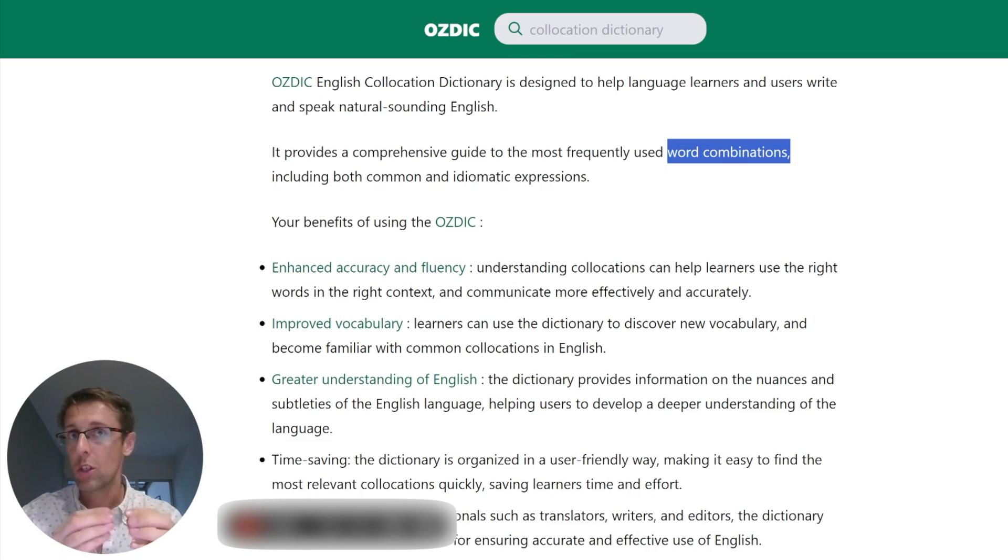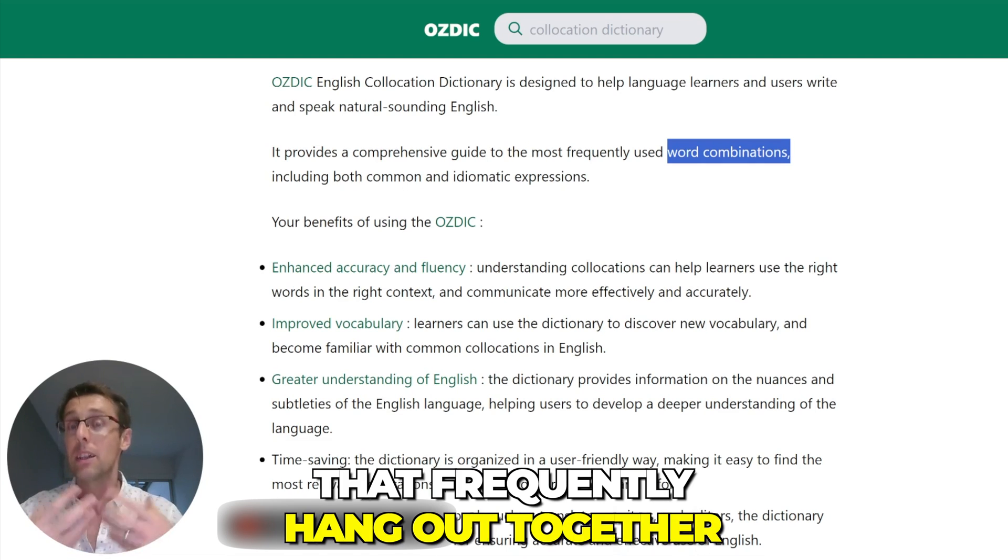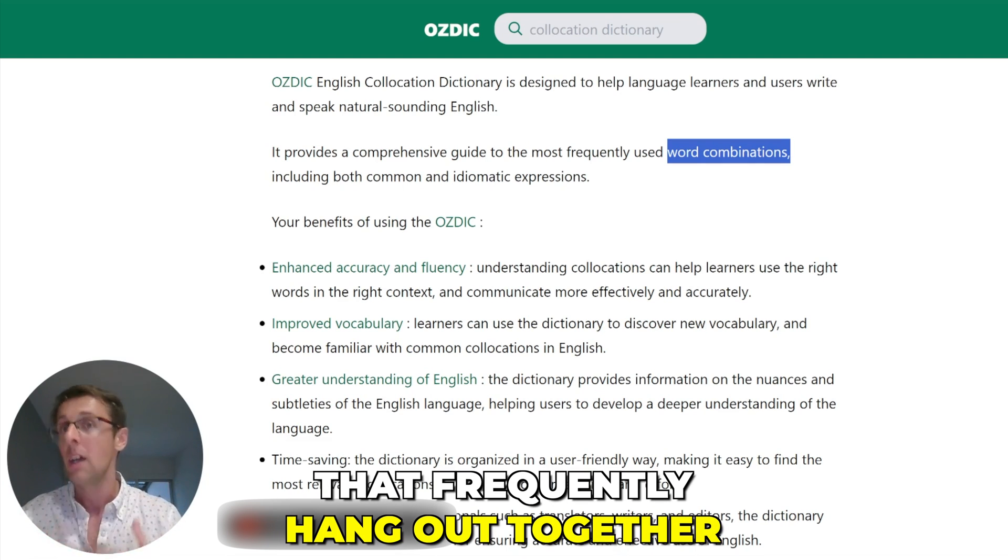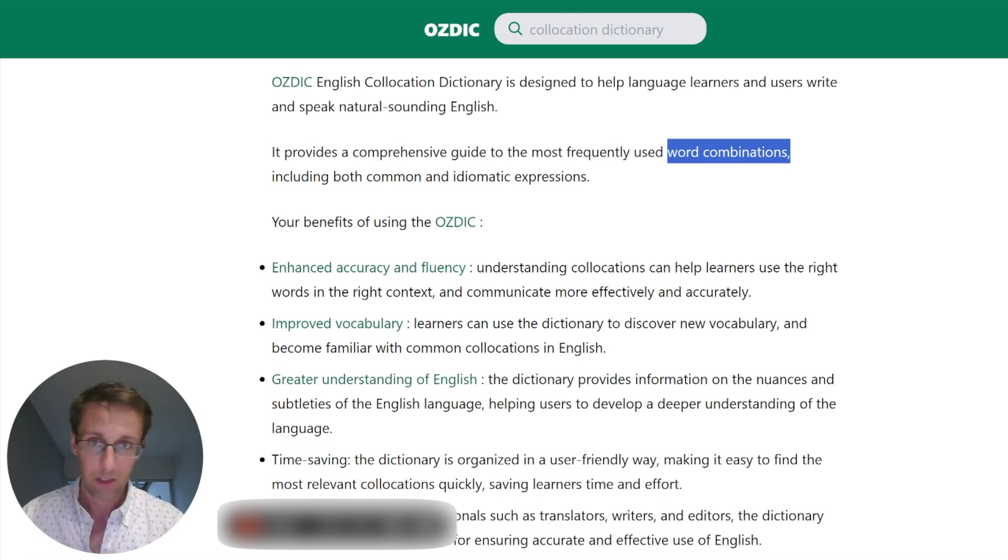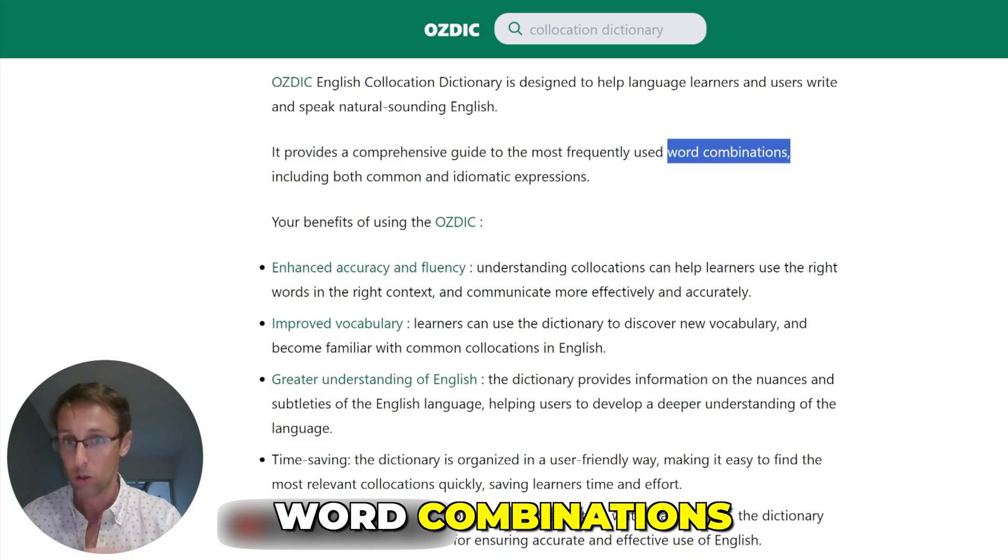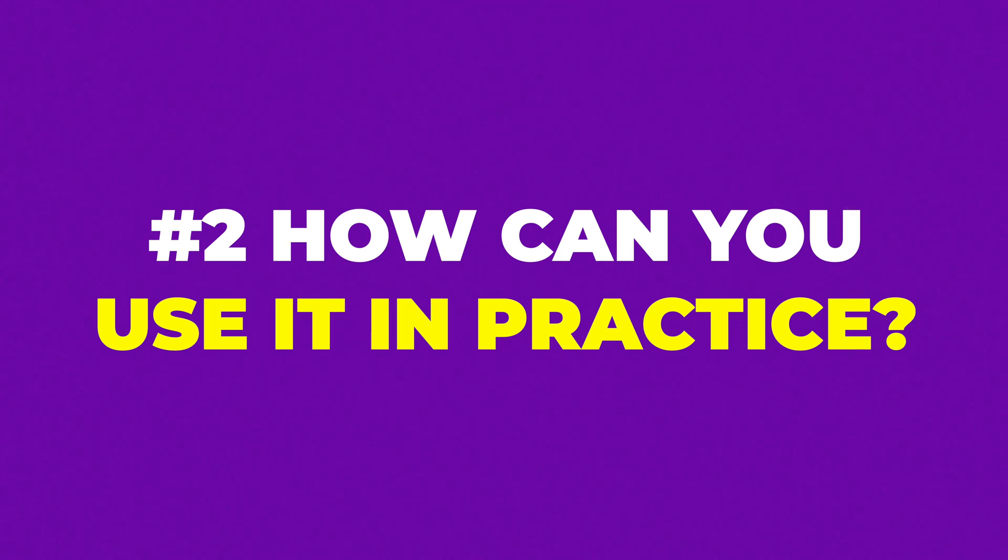And then there are some words which sometimes hang out together but not that frequently. And then there are words, combinations of words, which never hang out together. They just basically hate the guts of each other. They will never ever drink coffee together at all. And what we want to do when we're writing scientific texts is we want to use those best buddies, we want to use words together that frequently hang out together, especially when it comes to writing scientific texts. That's basically how OZDIC works. It's a dictionary of collocations, of word combinations.